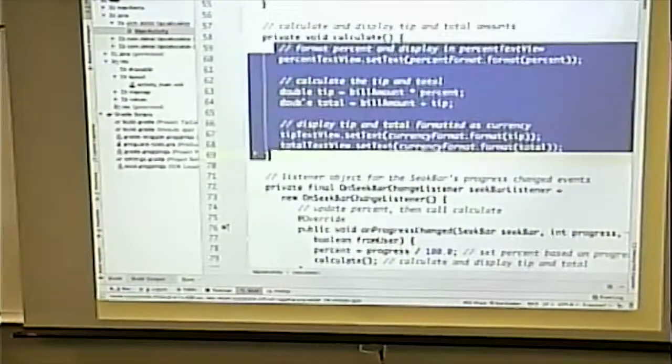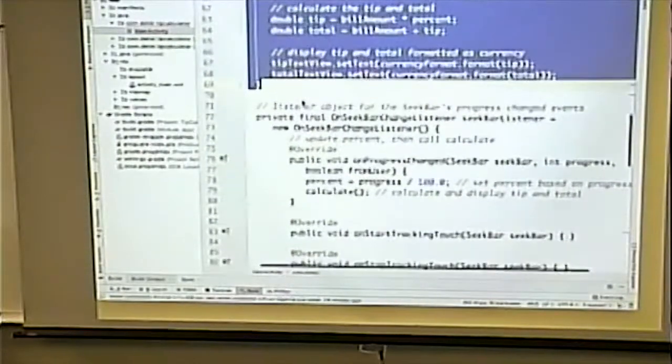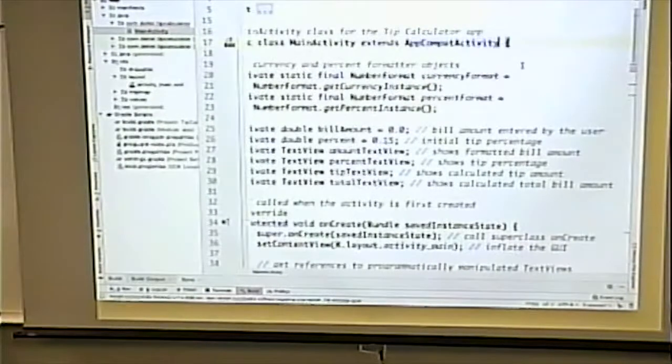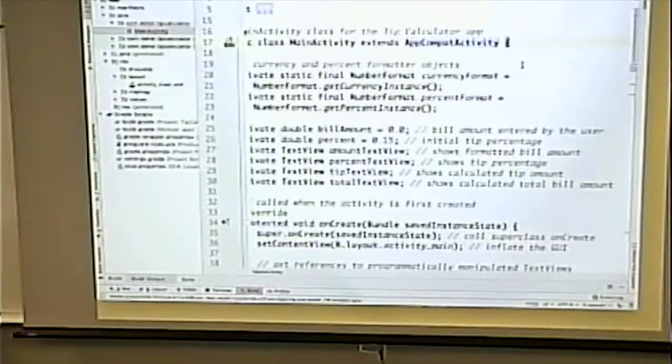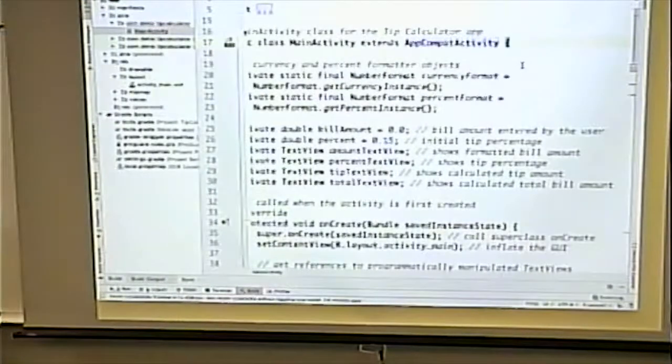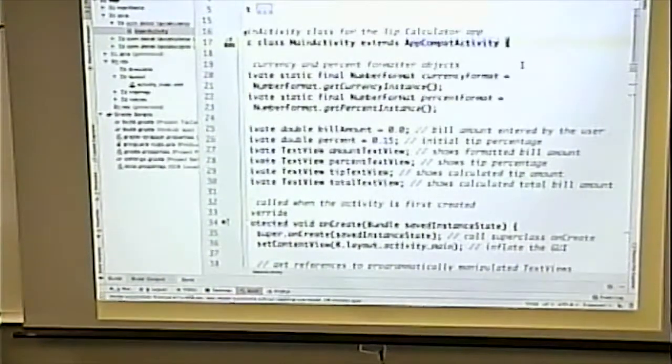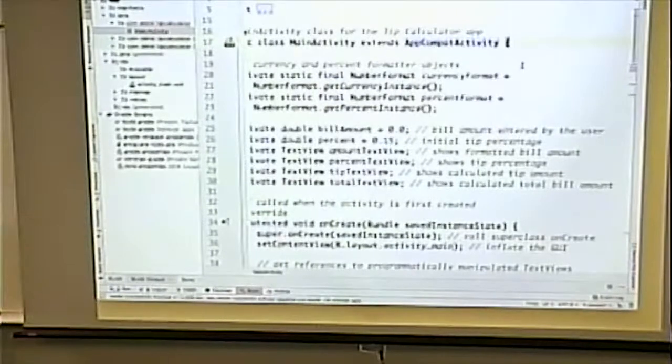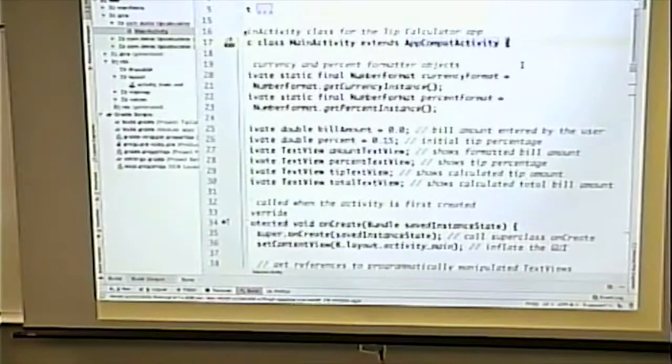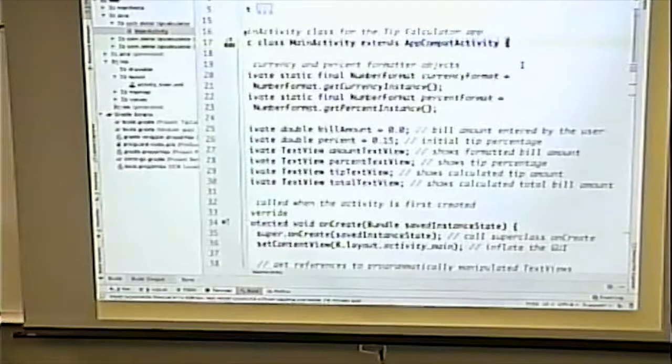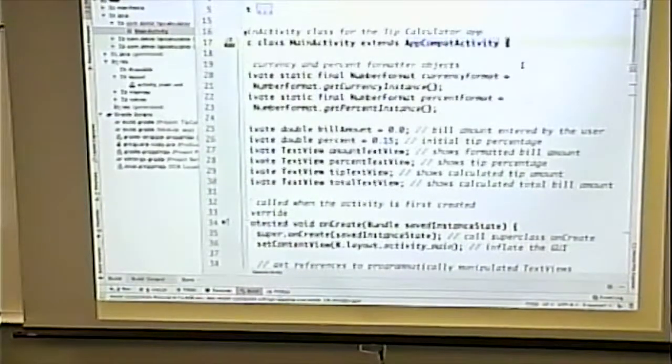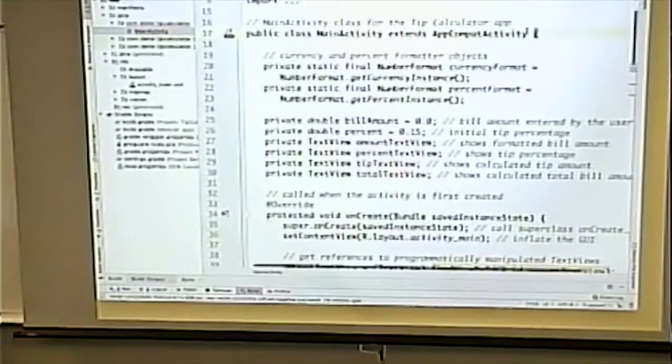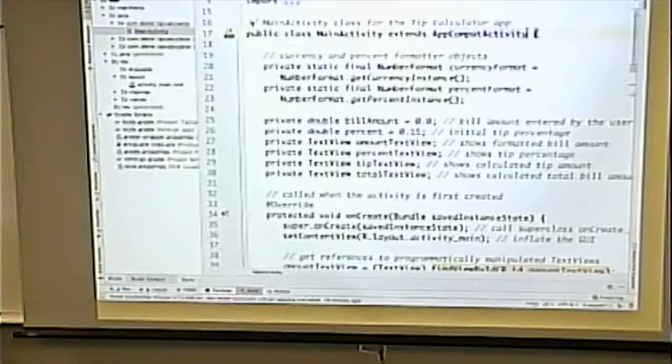All right. So the only thing we have to look at are the listeners. Now this is different than the other examples that we covered. Because in the other examples we covered, for one, we had a button. But maybe more significant than that is our main activity class implemented the listener interface. It implemented the on click listener interface. This guy does not do that.